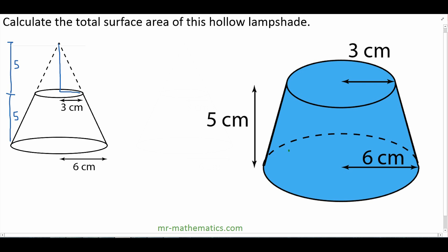We can use this to work out the slant length of the top part of the cone using Pythagoras's theorem. So that will be 5 squared plus 3 squared, which is 25 plus 9. So that will be the square root of 34.